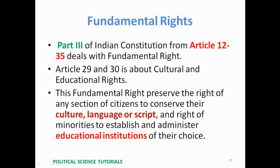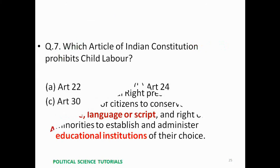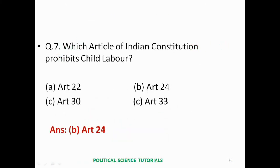Question 7: Which article of the Indian Constitution prohibits child labour? Options: Article 22, 24, 30, or 33. The right answer is Article 24.